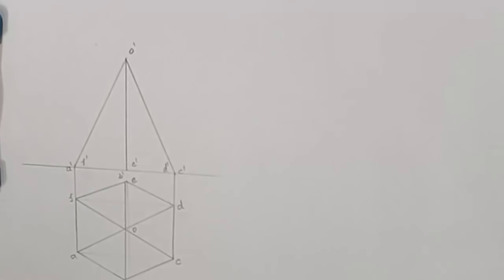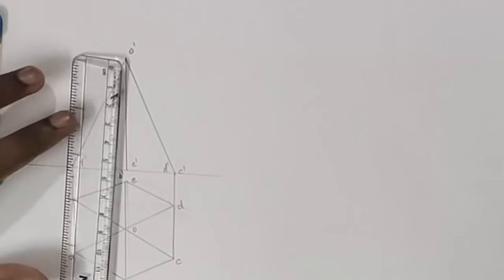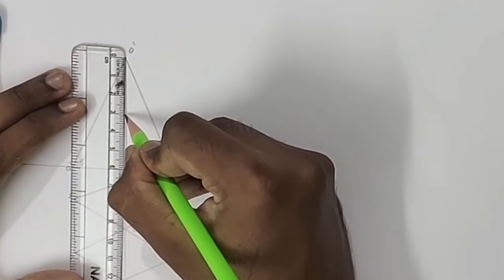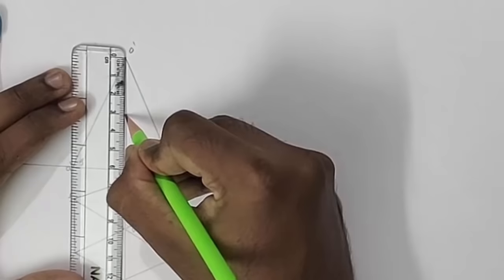Now see the cutting plane. The cutting plane is inclined at 40 degrees to HP, bisecting the axis. As the cutting plane bisects the axis, the total length is 60 mm, so at 30 mm it cuts the solid at the center. That's the meaning of bisecting.